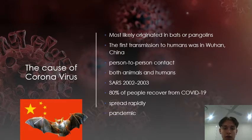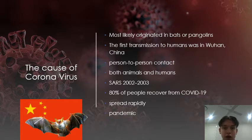Many health experts believe that the new strain of coronavirus likely originated in bats or pangolins. The first transmission to humans was in Wuhan, China. Since then, the virus has most likely spread through person-to-person contact.